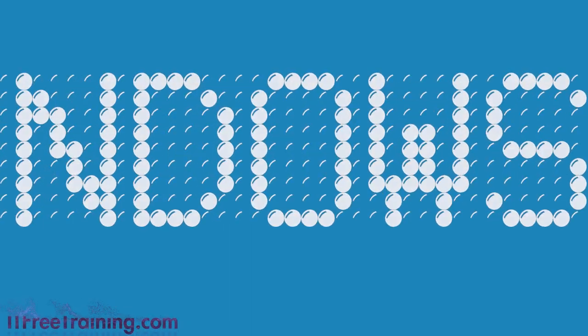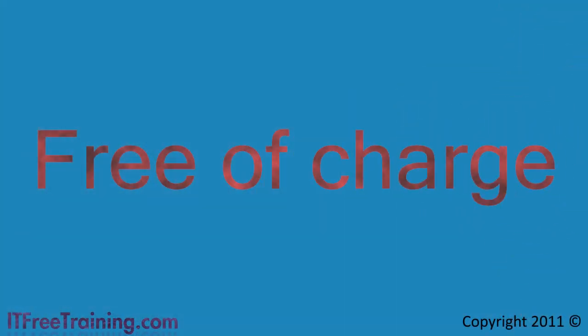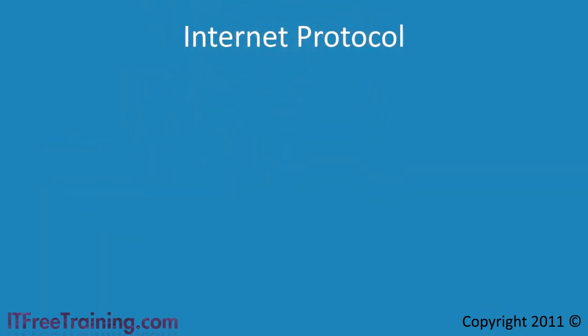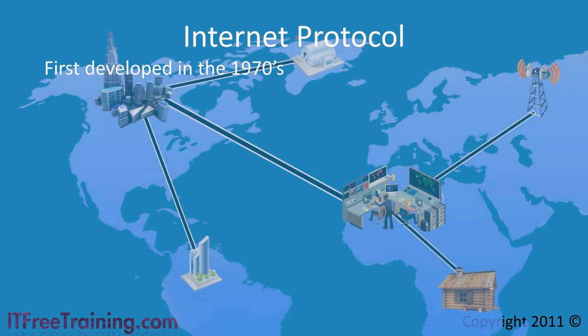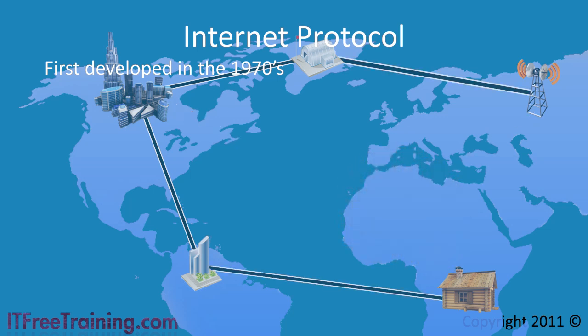Welcome back to your free Windows 7 training, available free of charge. In this video I will look at the internet protocol. The internet protocol was first developed in the 1970s as part of a number of defense research projects. The idea was to build a decentralized network that would still operate when parts of it were damaged by war.